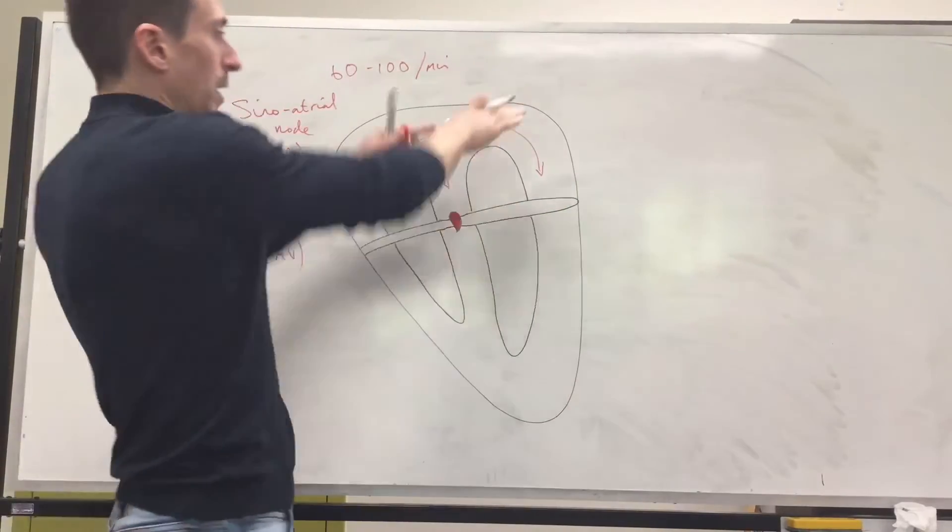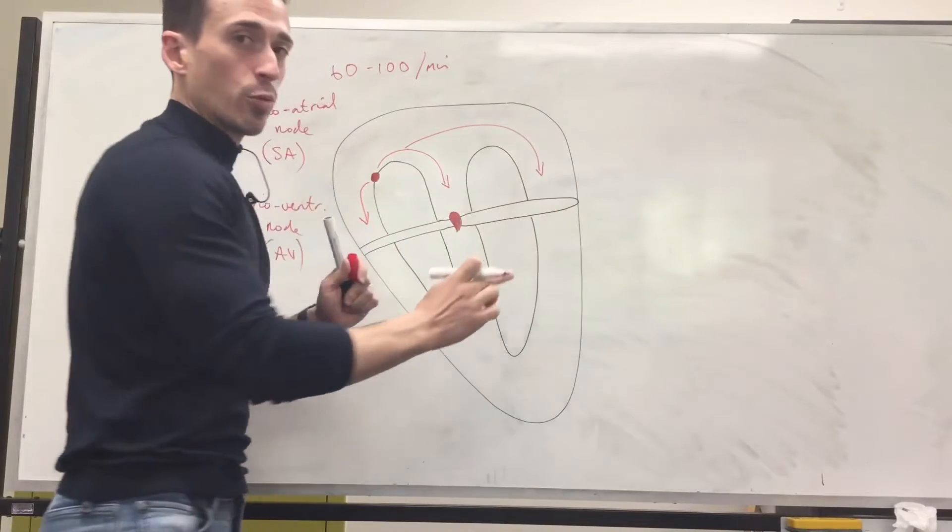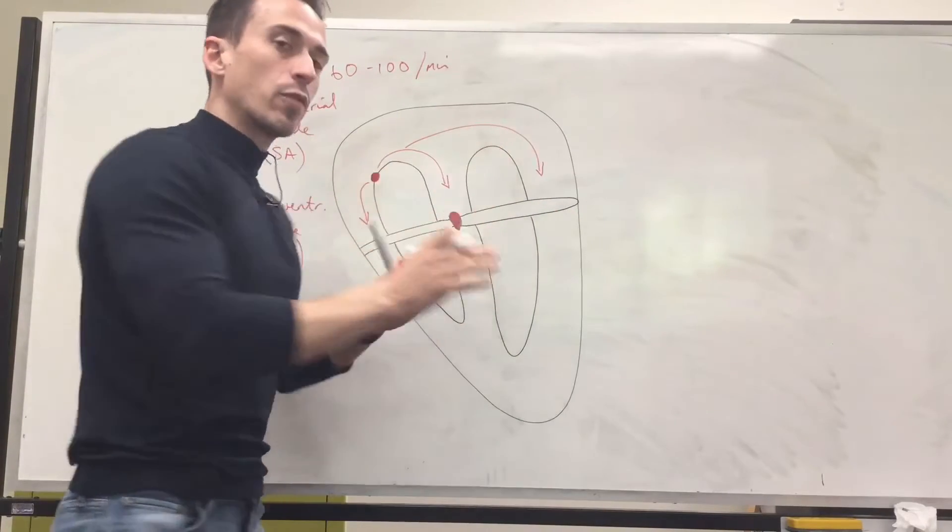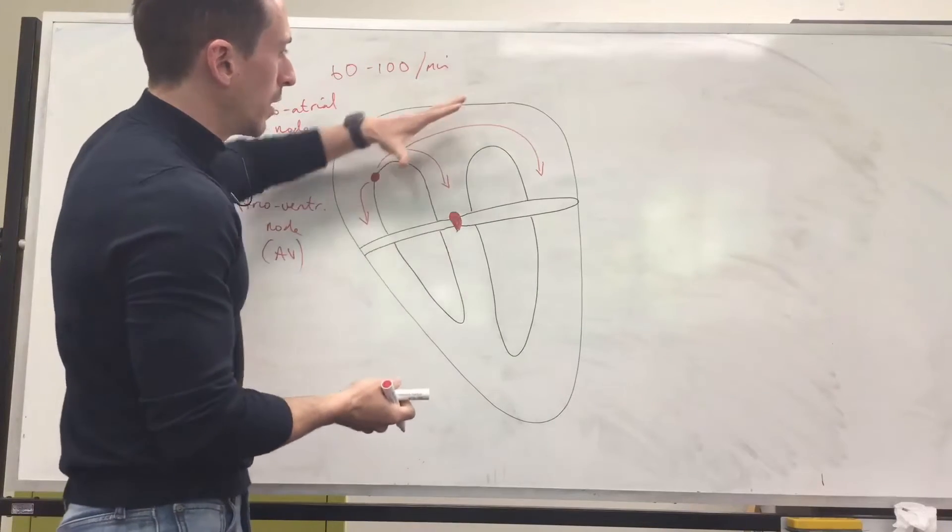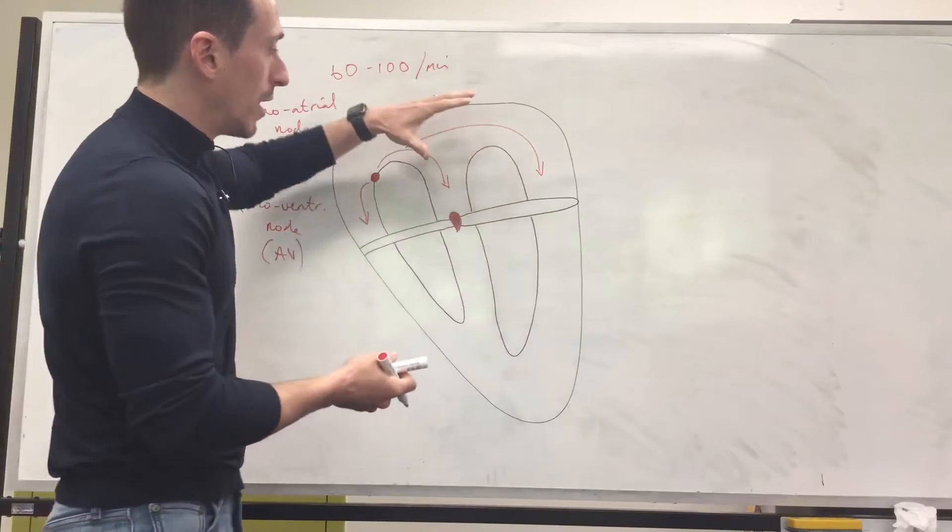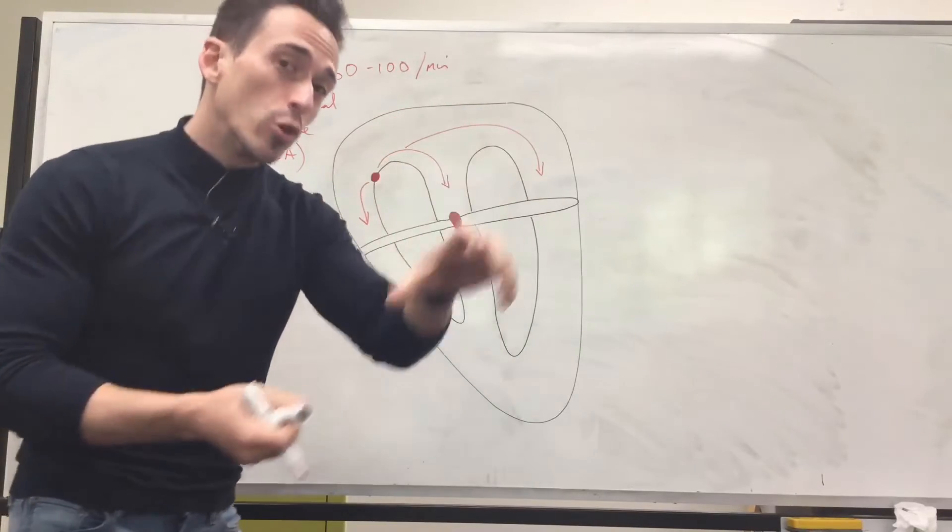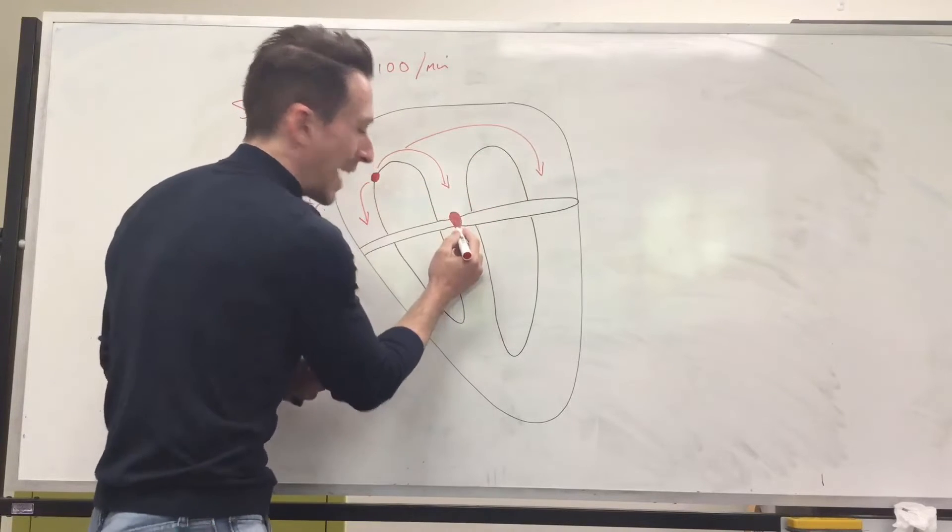Now this is important. The electrical signal gets stopped at this bit of tissue right here. And it stops for around about 0.4 of a second. So we've got the buh, boom is going to be the next part. So this is that pause between the two beats of your heart. So it all funnels into the AV node.